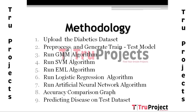In the pre-processing module, we read the dataset and analyze non-numerical and numerical values. If any non-numerical values are present, we convert them into numerical values. We then split the dataset into train and test partitions — 80% for training and 20% for testing.